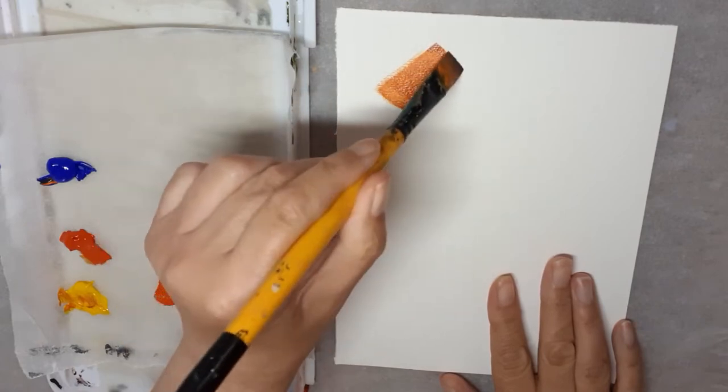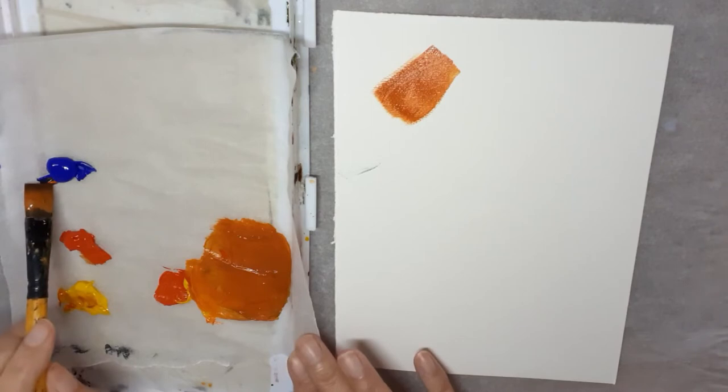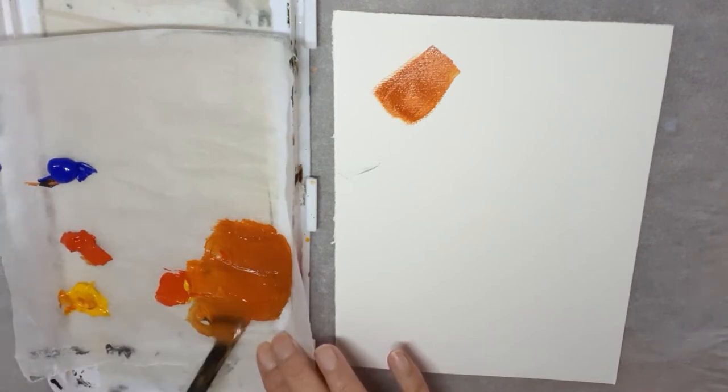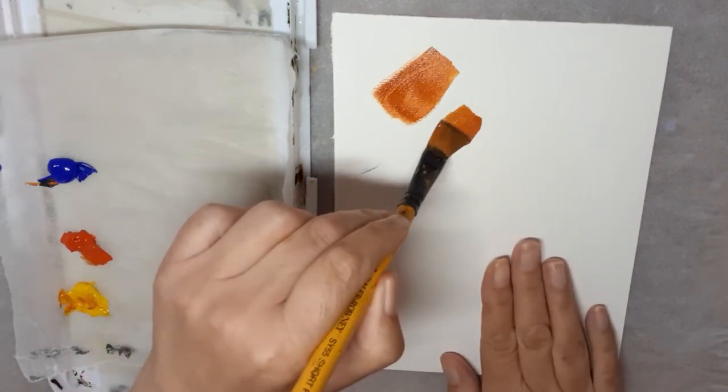A nice strong terracotta. That's one way of doing that. If you want to darken it down, just add more blue and get slightly darker.